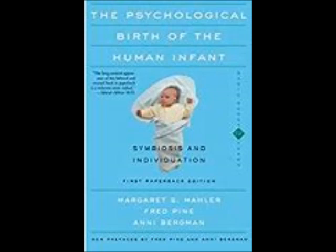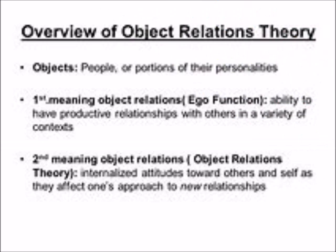From two to four months is the symbiotic stage. Here there begins a dim awareness of a satisfying object. As a side note, Mahler uses the term symbiosis as a metaphor, useful from biology. Here the infant is still in a delusional, hallucinatory state and behaves and functions with the mother as a dual unity. In this state there is still no differentiation of inner and outer, or of self and other.